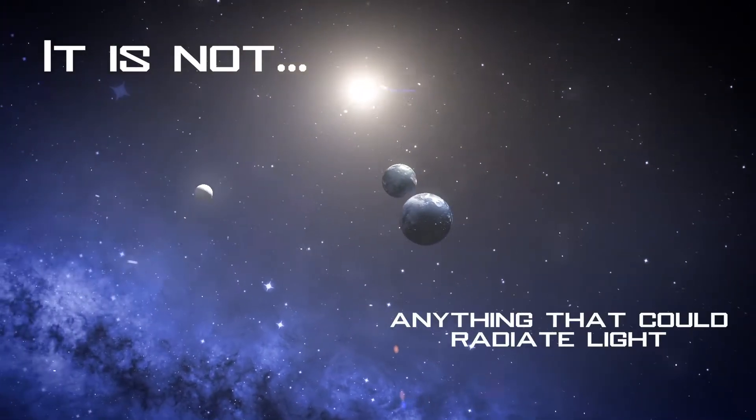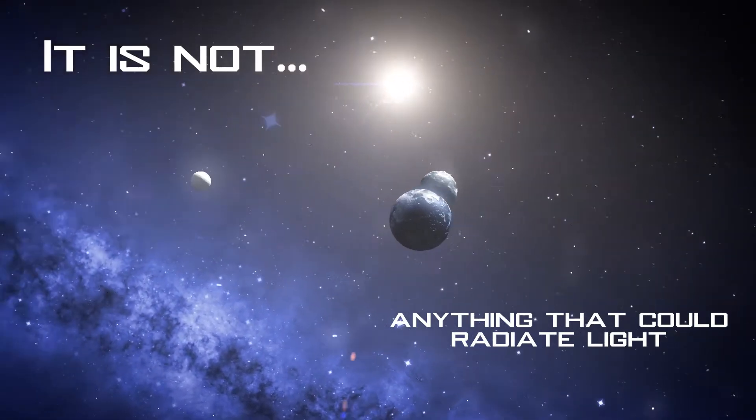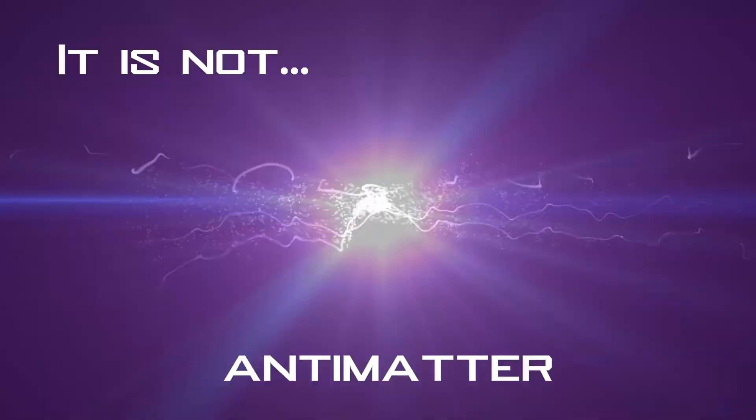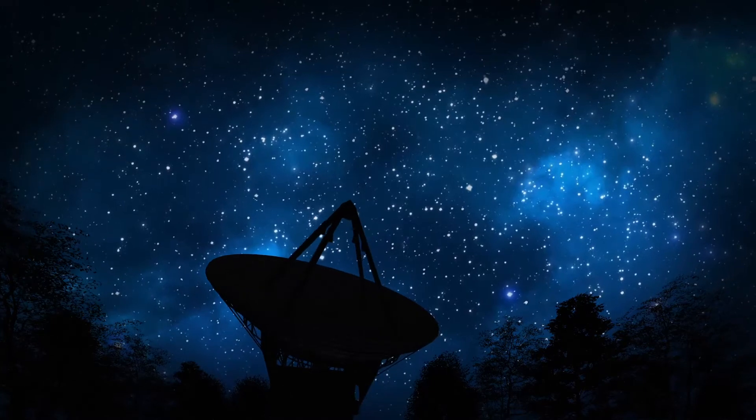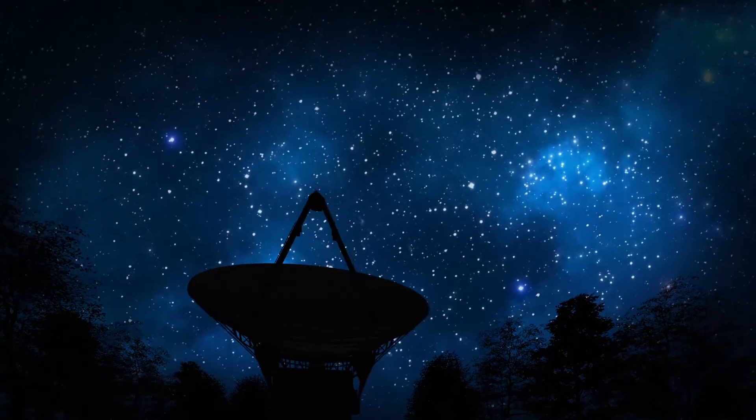We know that it's not planets or stars or galaxies or anything that could radiate light. We know it's not antimatter. Antimatter wipes out other matter on contact. In doing so it produces gamma rays. But astronomers have found no evidence that dark matter behaves in the same way.